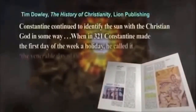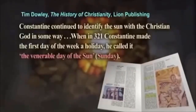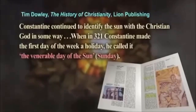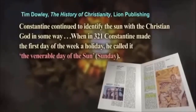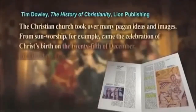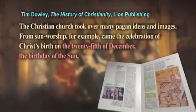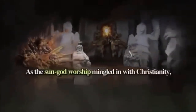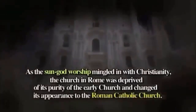Constantine's edict in 321 played an important role in making the sun god worship faith take root in the church. Constantine continued to identify the sun with the Christian God. When in 321 Constantine made the first day of the week a holiday, he called it the venerable day of the sun — Sunday. The Christian church took over many pagan ideas and images. From sun worship, for example, came the celebration of Christ's birth on the 25th of December, the birthday of the sun. As the sun god worship mingled with Christianity, the church in Rome was deprived of its early church purity and transformed into the Roman Catholic Church.